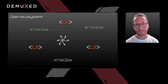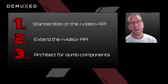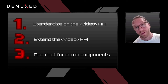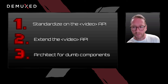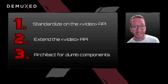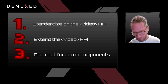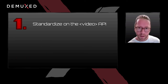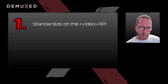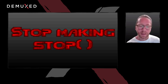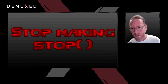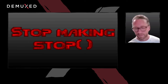How do we do that? One: we've got to standardize on the video API. Number two: we've got to extend that API. And then three: we're going to architect for dumb components. Starting with standardizing on the video API — just stop making things like stop functions we don't need.